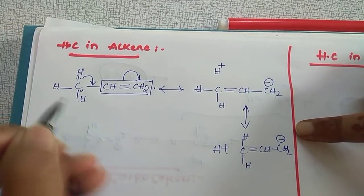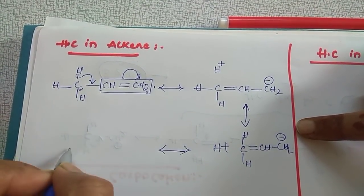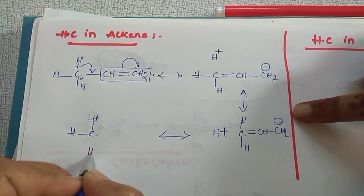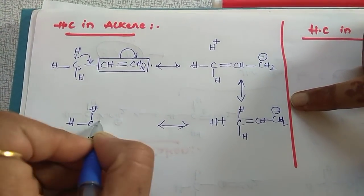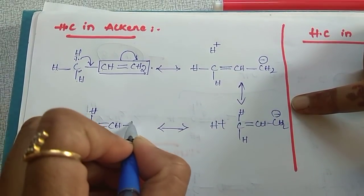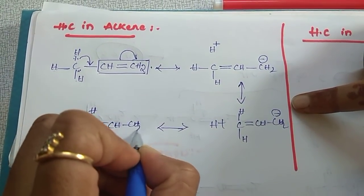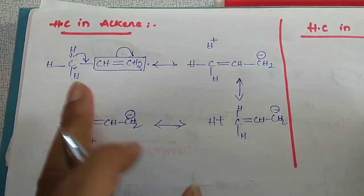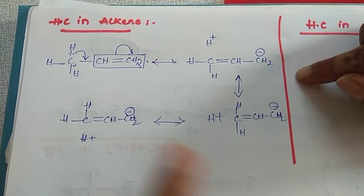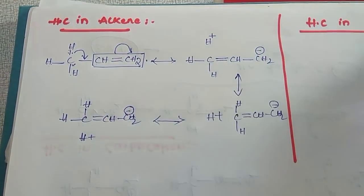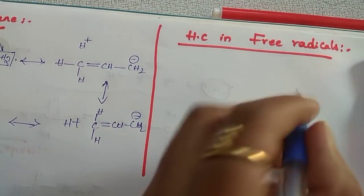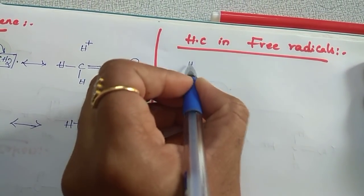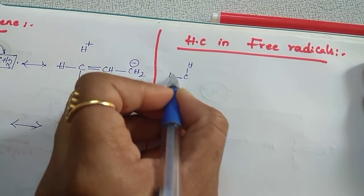If the third hydrogen involves, we get a third structure. In this way, total four structures are obtained for alkenes, and due to alpha hydrogens, three hyperconjugative structures. The same approach applies to free radicals — a free radical is a carbon with a single unpaired electron.